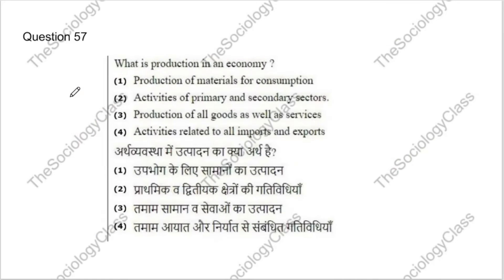Question 57: What is production in an economy? Options: production of material for consumption; activities of primary and secondary sector; production of all goods as well as services; or activities related to all imports and exports. The correct answer is C — production of all goods as well as services is production in an economy.